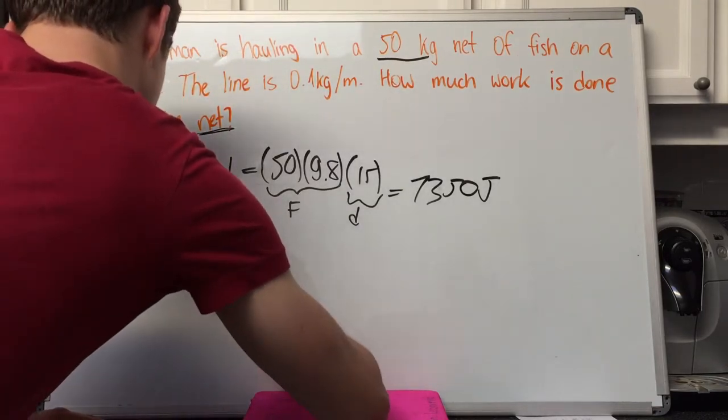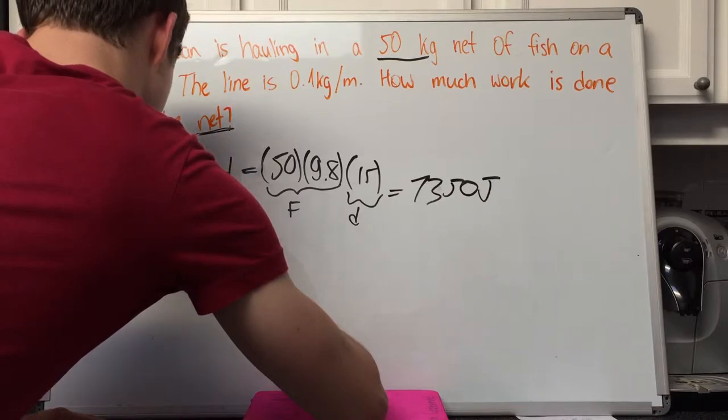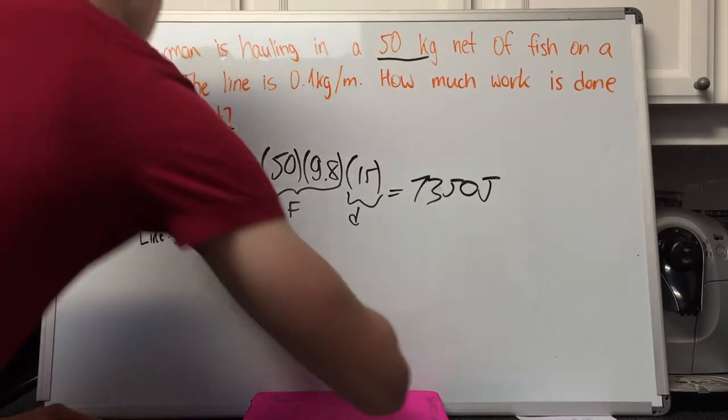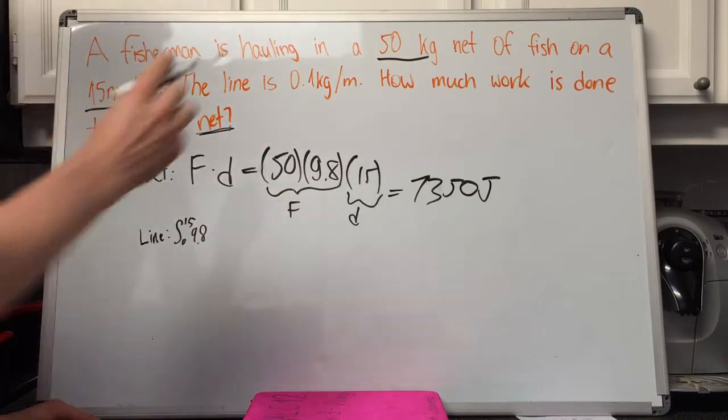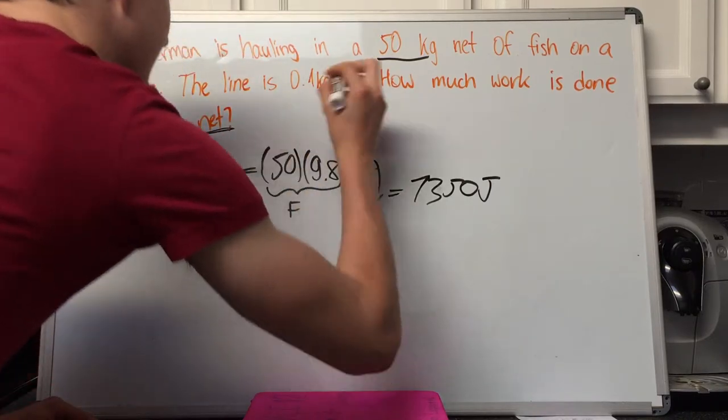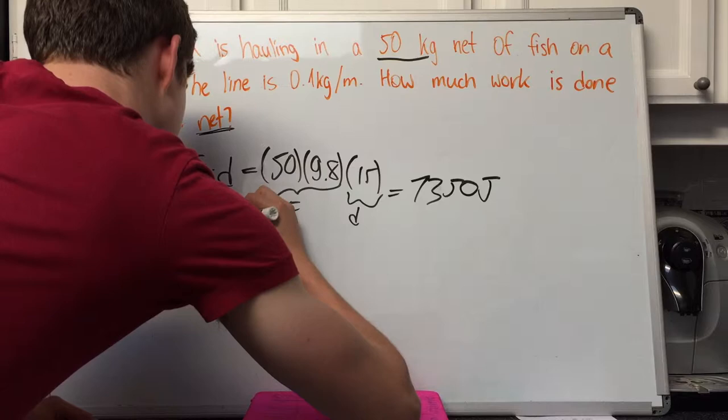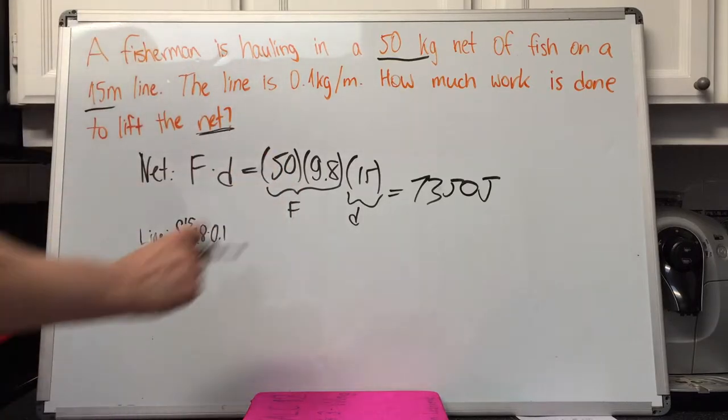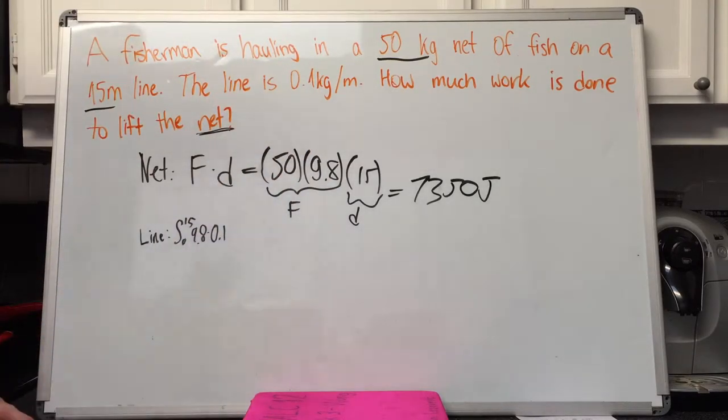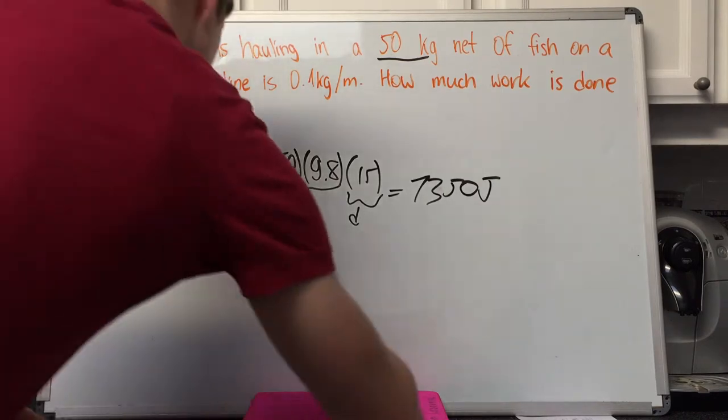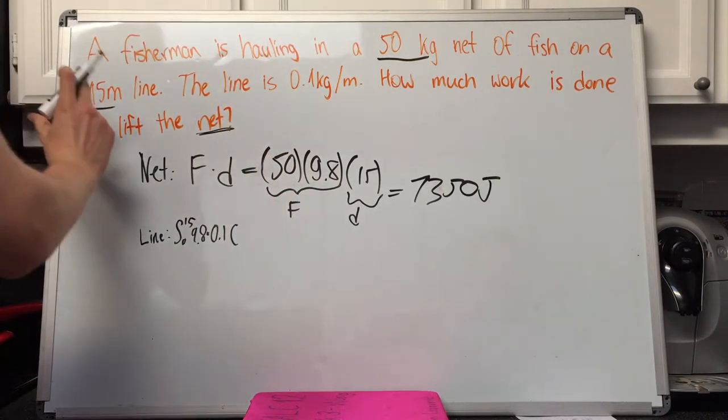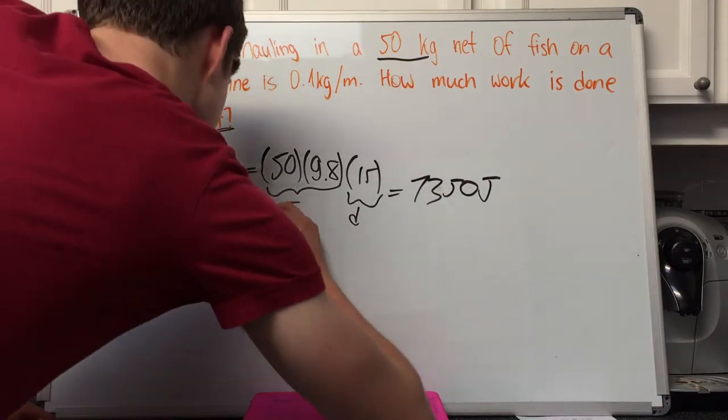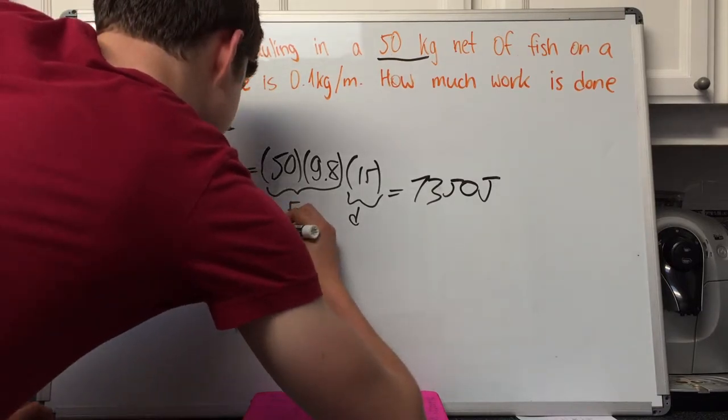Integrate from 0 to 15. We have 9.8, acceleration due to gravity, multiplied by 0.1, the kilograms per meter. This converts kilograms per meter into newtons per meter. Then, that's all multiplied by the length of line, 15 minus x.